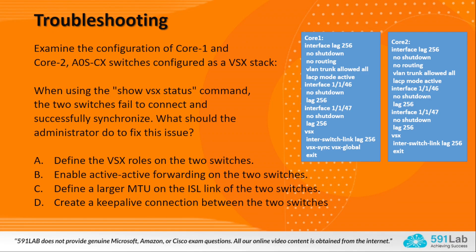The next question under troubleshooting: examine the configuration of Core1 and Core2 AOS-CX switches configured as a VSX stack. When using the show vsx status command, the two switches fail to connect and synchronize. Core1 and Core2 both define interface LAG 256 as a no-routing switchport with trunk VLAN all and LACP mode active. Interfaces 1/1/46 and 47 are members of LAG 256.